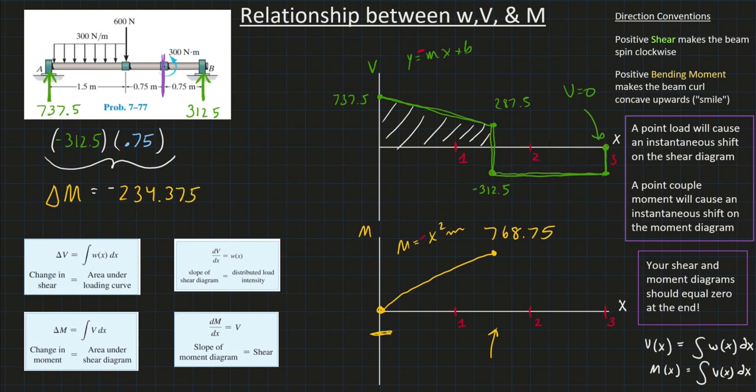That'll be a negative 234.375. So, that is the area under the curve of this section. So, therefore, I know that my moment will drop from here to somewhere around here. So, let me do that exactly. So, it's 768.75 minus 234.375. That's 534.375. So, that's going to be around here.